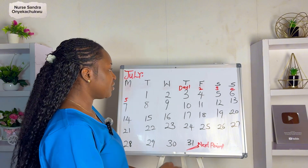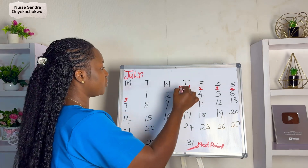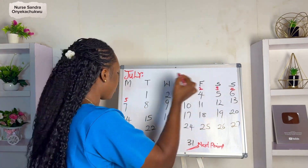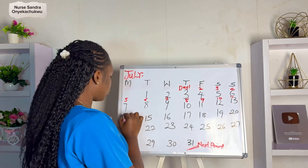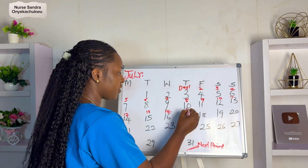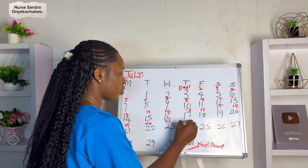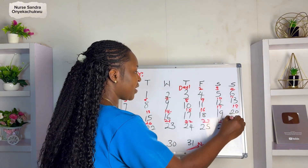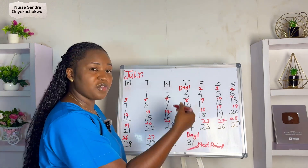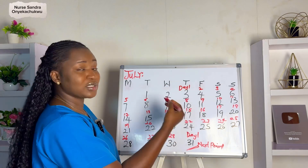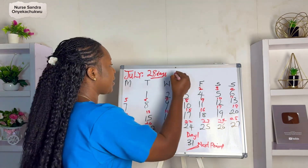What you're going to do is start counting from the first day you see your period to the day before your next period, which is the 30th of July. Counting from day one through to day 28 — the 31st of July becomes day one of another cycle. So for this month of July, your cycle length is 28 days.